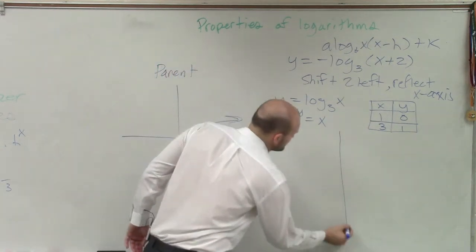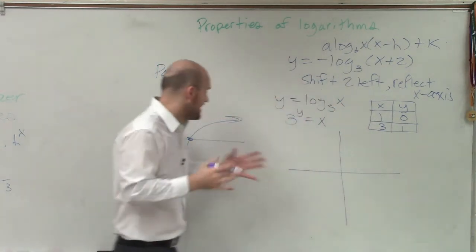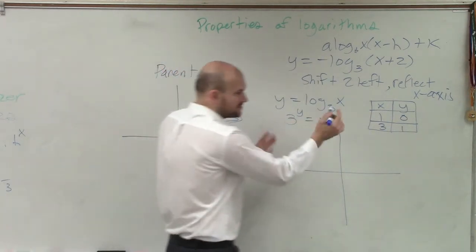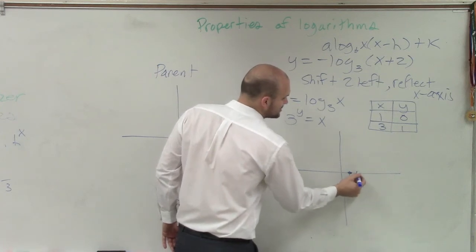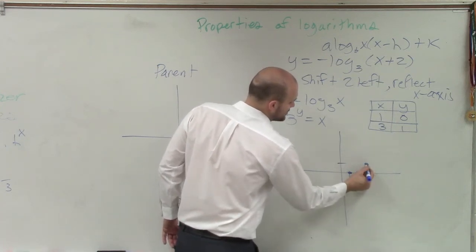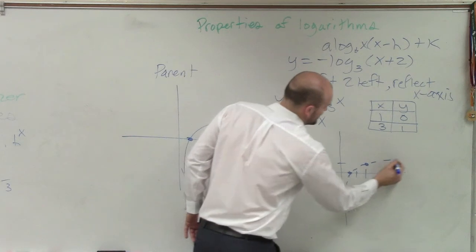So now let's graph those. That's going to be, again, I'm regraphing my parent function. But I'm getting a little bit more detailed with two points. So I have 1 comma 0. And I have 1, 1, 2, 3 comma 1. So the graph looks like this.